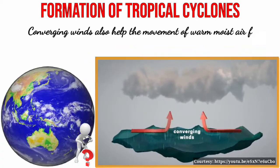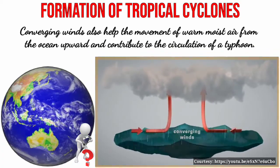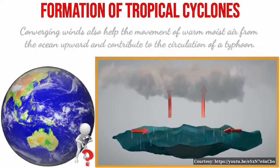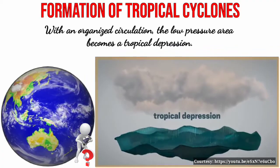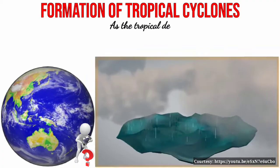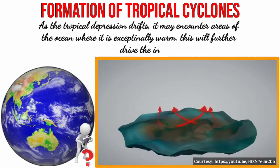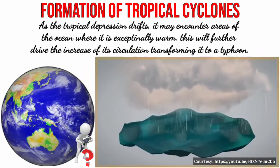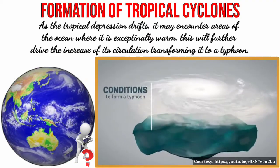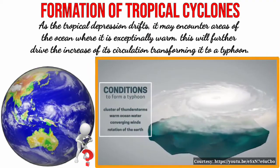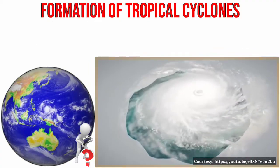Converging winds also help the movement of warm moist air from the ocean upwards and contribute to the circulation of the typhoon. With an organized circulation, the low pressure area becomes a tropical depression. As the tropical depression drifts, it may encounter areas of the ocean where it is exceptionally warm, further driving the increase of its circulation and transforming it into a typhoon. When conditions are ideal, the system starts to rotate even faster, and now, on a clear center, forms the eye of the typhoon.